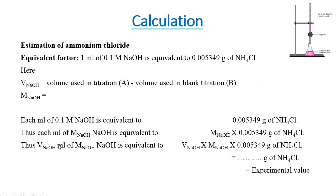Thus, volume of M NaOH ml is equivalent to V NaOH times M NaOH times 0.005349 g of NH4Cl. By multiplying all these values, we can get the grams of ammonium chloride and this is the experimental value.